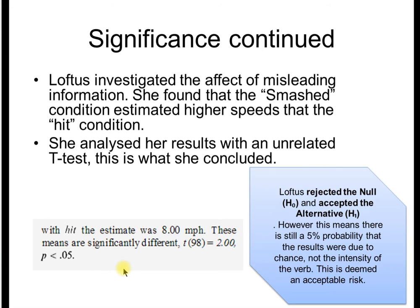Here's an example of significance. Loftus investigated the effect of misleading information. We know this. She had smashed, hit, all those conditions. She analyzed the results. She used an unrelated t-test. In this case, she is using a probability level of 0.05, a 5% probability that her results occurred due to chance.